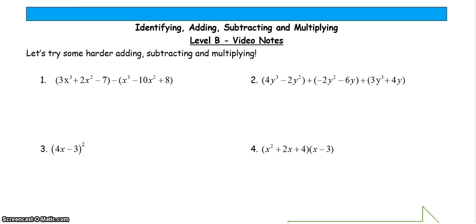So for number 1, when I have a minus sign in between two parentheses, what I like to do is pretend that's a negative 1 and then distribute it. So I'm going to distribute this negative 1 to everything in there and keep the first parentheses the same. So 3x³ + 2x² - 7x - x³ + 10x² - 8. When I multiply each thing in the second parentheses by negative 1, really that just changes the sign.